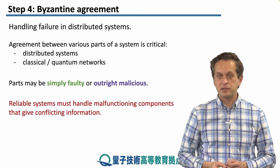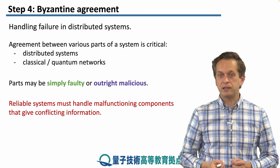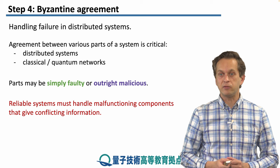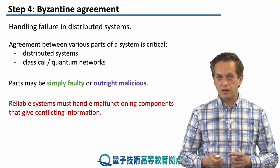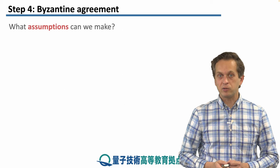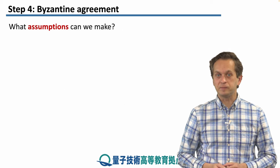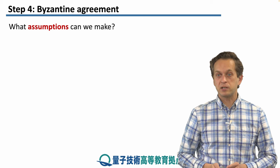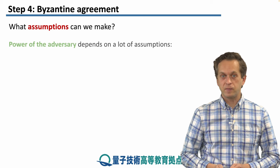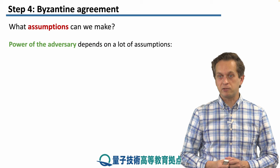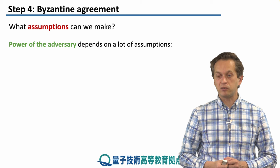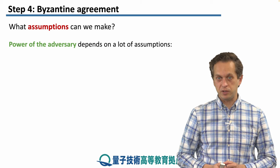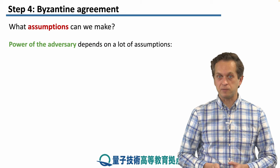Reliable systems must handle malfunctioning components that give conflicting information. Now we're going to see how it can be done. First of all, what assumptions can we make? How powerful is the adversary that's trying to confuse us or give us conflicting information and sway our decision?